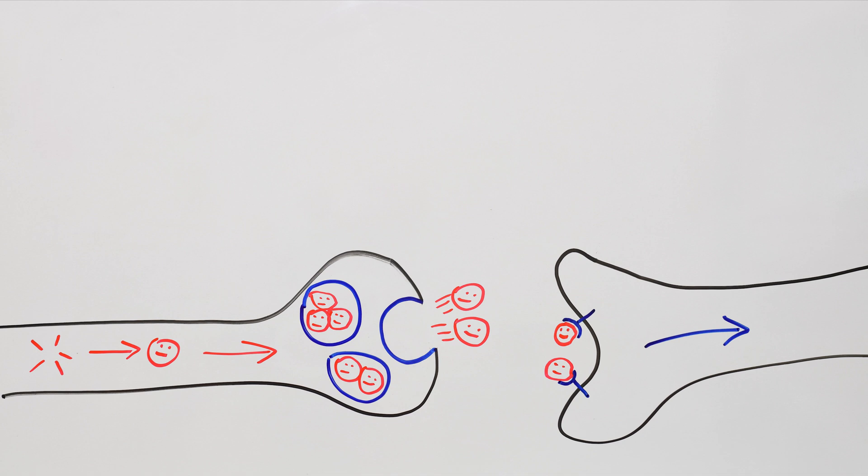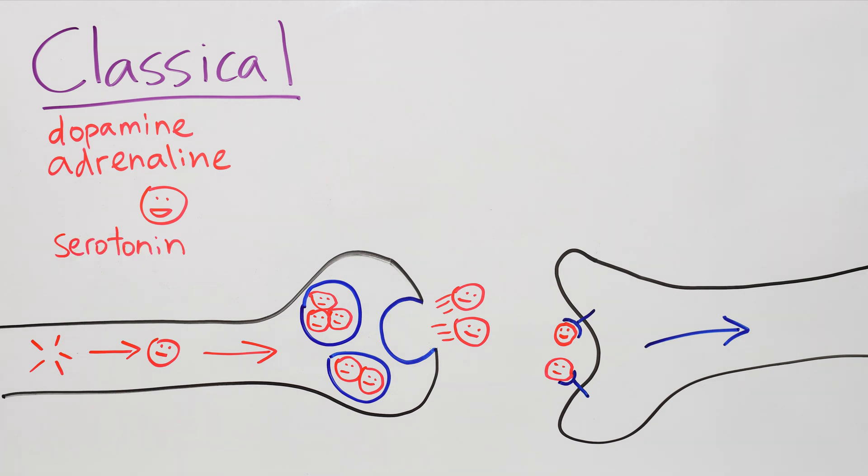There are many different kinds of neurotransmitters, so we'll break this up into multiple videos. This one will cover classical neurotransmitters. They were the first to be discovered in the first half of the 20th century, and they include some of the legendary names like dopamine, adrenaline, and serotonin, although they also include less well-known but no less cool-sounding members like acetylcholine, GABA, glutamate, and others.